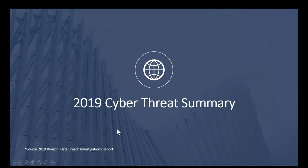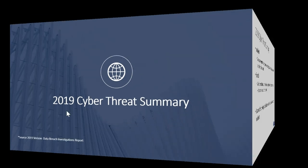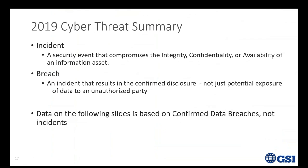Let's start with the 2019 cybersecurity threat summary. An incident is an event that compromises the integrity, confidentiality, or availability of an information asset. One of the first things you have to do in your cybersecurity threat model — in the ISO world — is define your information security management system. One of the very first steps is to build a list of your assets. Those assets can be physical, like a filing cabinet or gold in a safe, or they can be electronic, like programs you've written or contracts in scanned form.